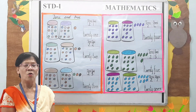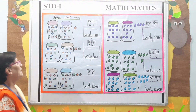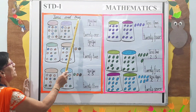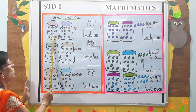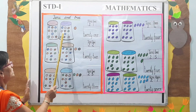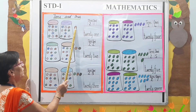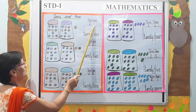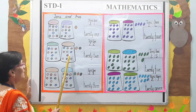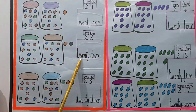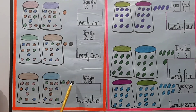Moving on to the last topic of Chapter 1 — Tens and Ones. Each container is having 10 balls.